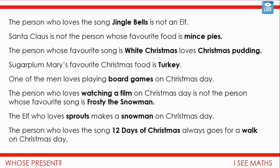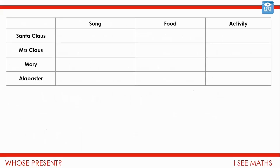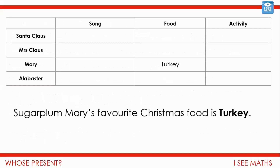The elf who loves sprouts makes a snowman on Christmas Day. The person who loves the song 12 Days of Christmas always goes for a walk on Christmas Day. Lots of information — but where on earth would we start? Hopefully you have a grid that looks a little bit like this one. The first thing I would do is this: Sugarplum Mary's favourite Christmas food is turkey. I know that one for sure, so I can put that in straight away. Favourite food — Mary — turkey.